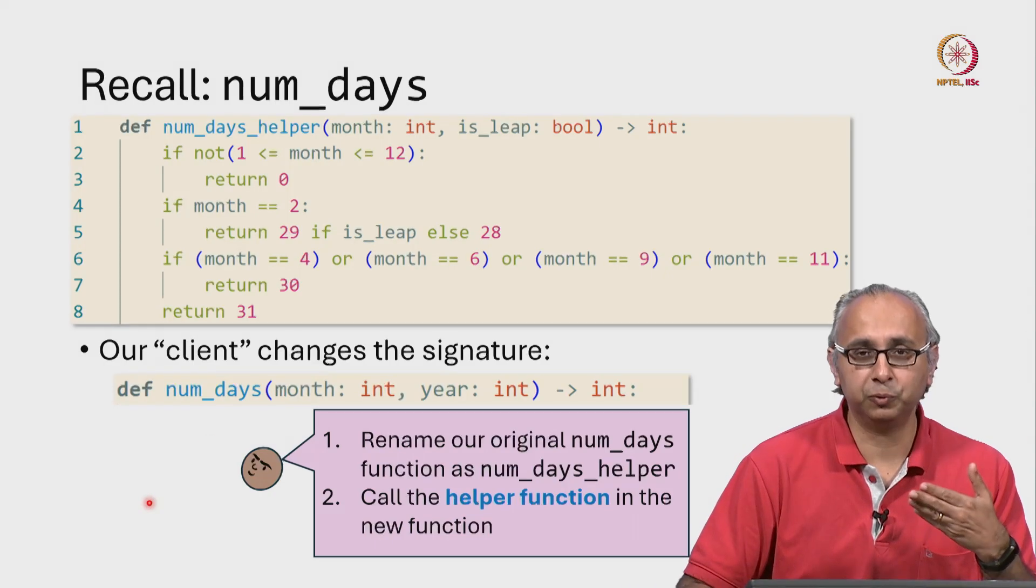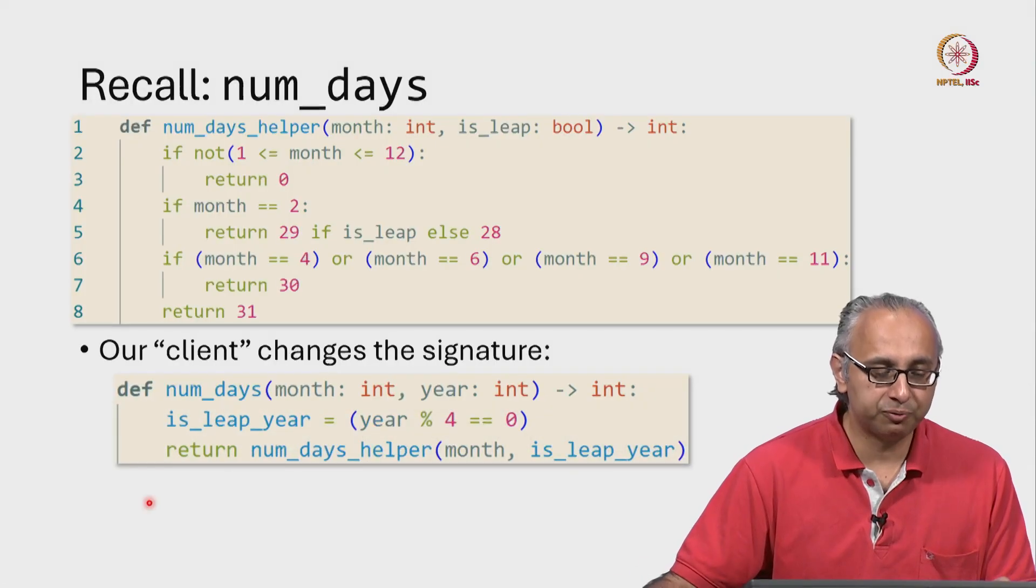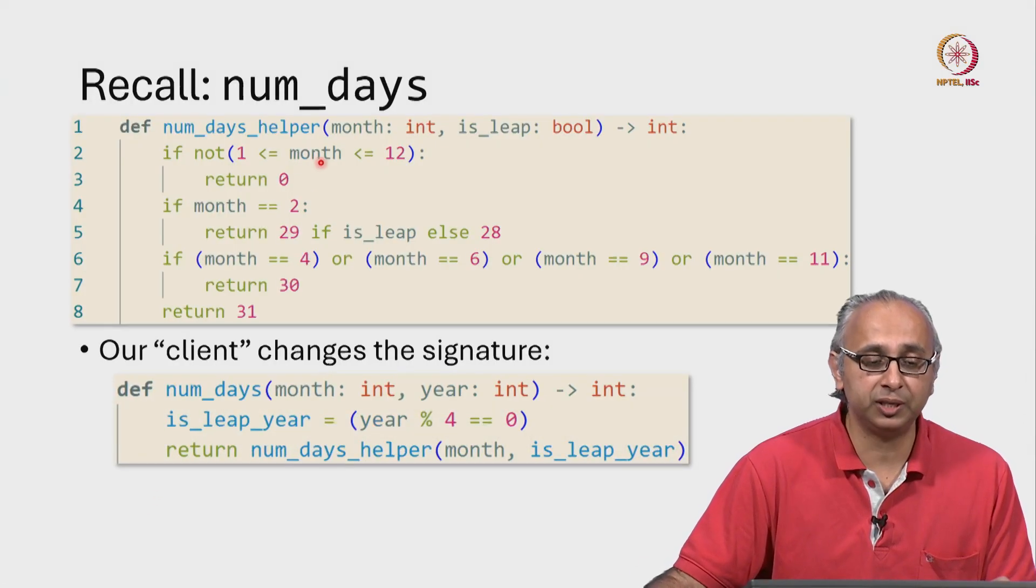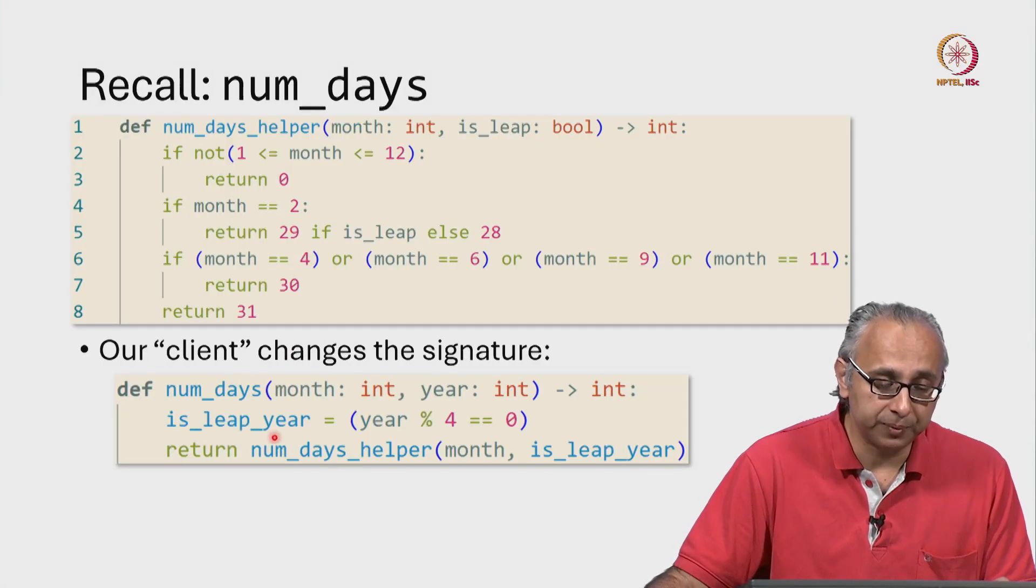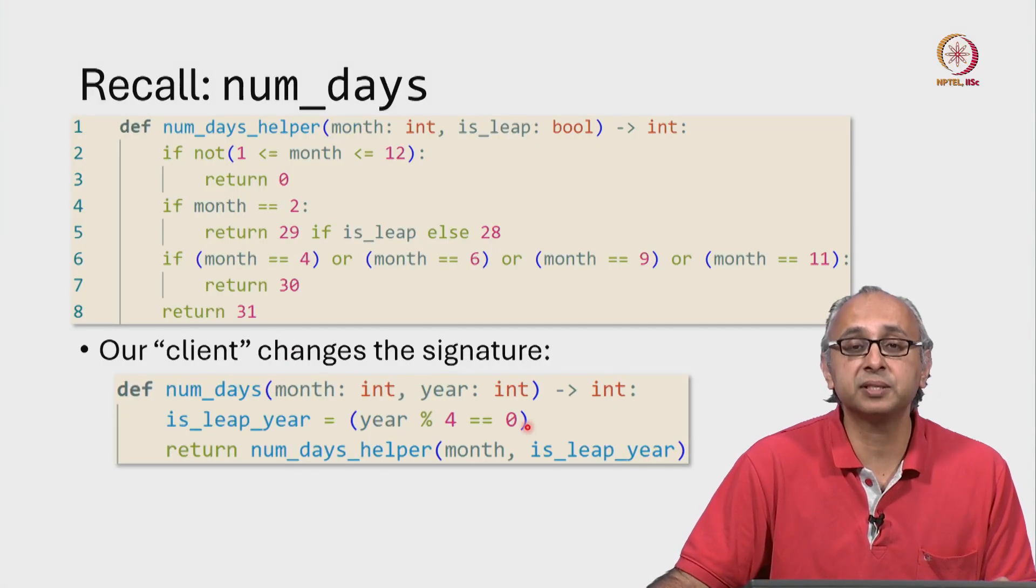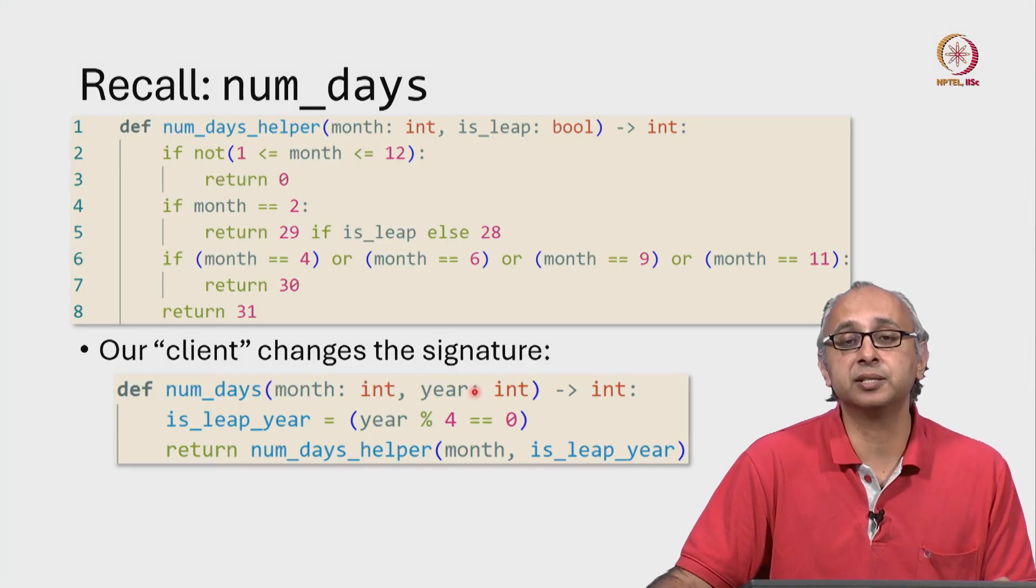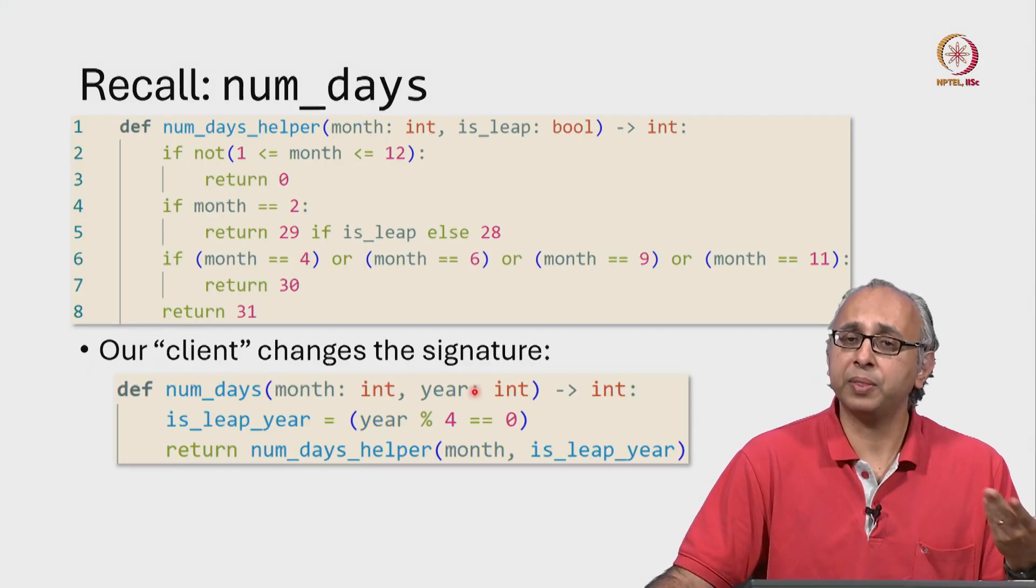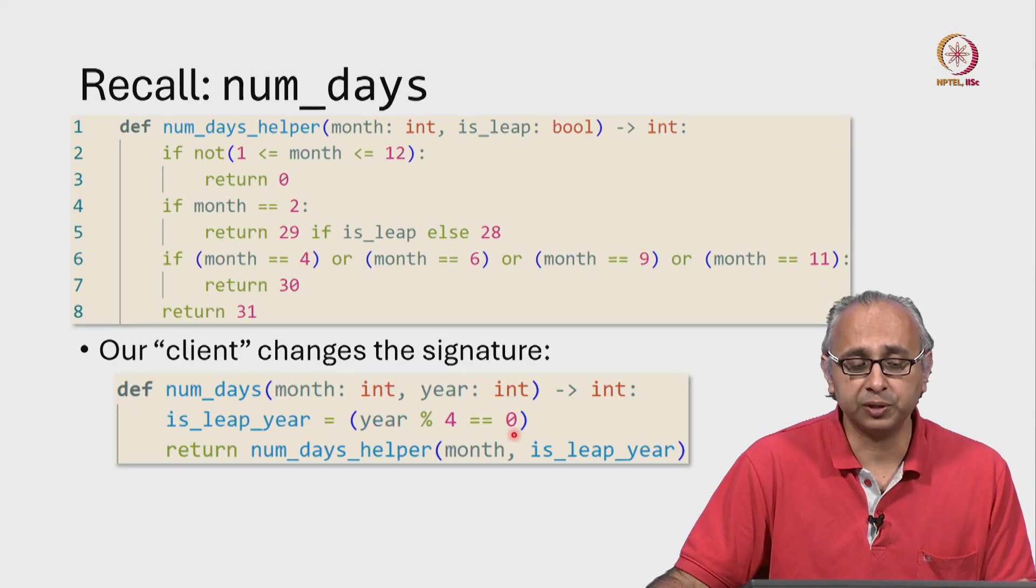Our friend says, well, that helper function needs the month and whether or not it's a leap year. So our friend is proposing this statement, this assignment statement to calculate if the given year is a leap year or not. Our friend says a leap year is one that is divisible by 4. So we will just calculate this expression year remainder 4 and check if that is equal to 0.